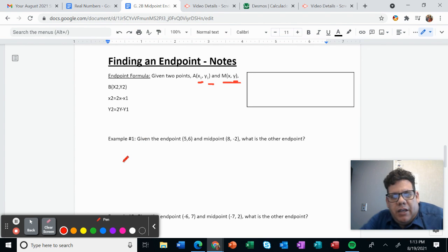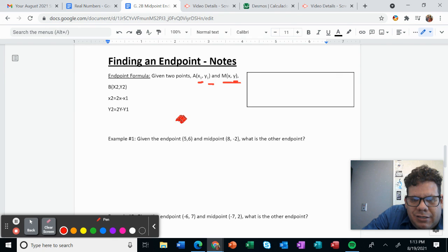Let's do it super easy. So we have the endpoint 5, 6. So remember the endpoint, if it's the first one, the name is X1, Y1. And for the midpoint, it's just X.